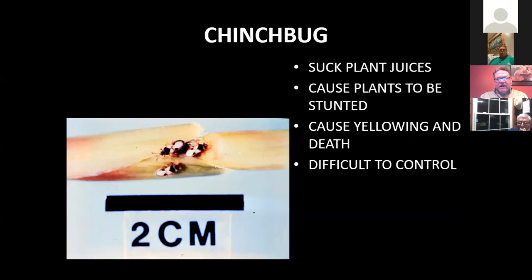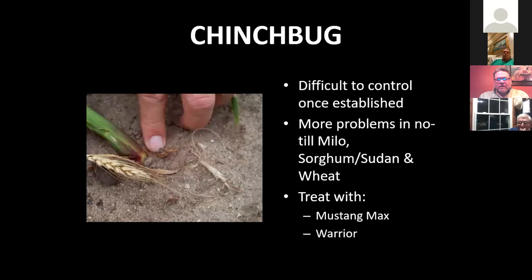Stink bugs — we don't see them too terribly much. They sting the plant, suck the juices out, and cause stunting. They are difficult to control. We see them in milo, sorghum, and sudan. You treat them with Mustang Max and Warrior.